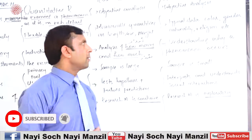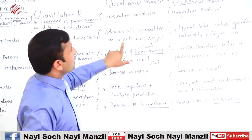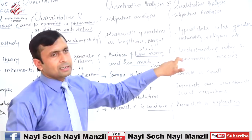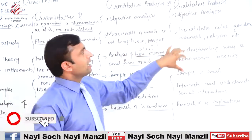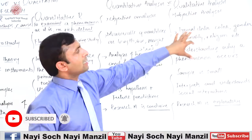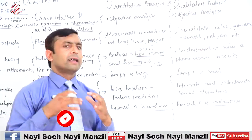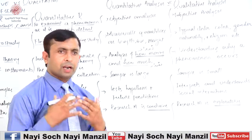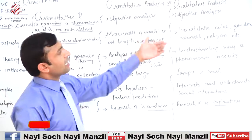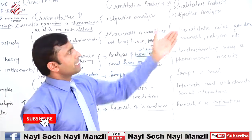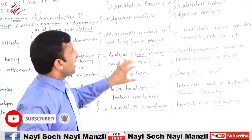As far as quantitative analysis is concerned, measurable quantities are there — for example, length, size, and weight. If we talk about qualitative analysis, typical data such as colour, gender, nationality, religion, and caste are involved, and they can be described in a subjective manner.